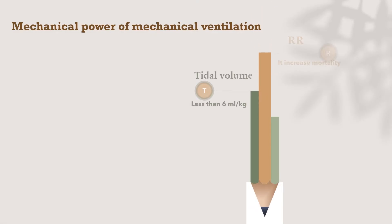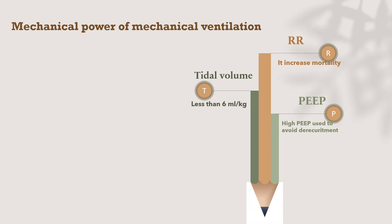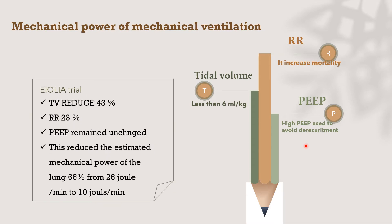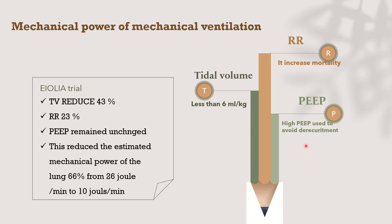The mechanical power of mechanical ventilation is reduced if we reduce the tidal volume to less than 6 mL per kg. Reduction of respiratory rate will also reduce mortality. However, using high PEEP avoids lung derecruitment. In the Aeolia trial, when they reduced tidal volume by 43% and respiratory rate by 23% while maintaining PEEP unchanged, the estimated mechanical power of the lung was reduced by 66%, from 26 joules per minute to 10 joules per minute.